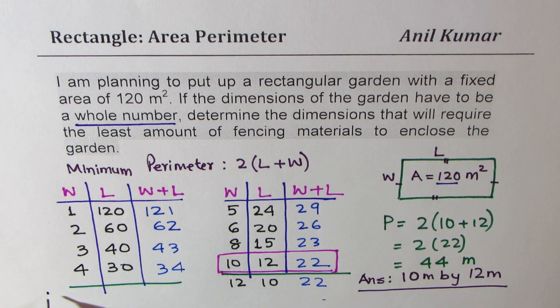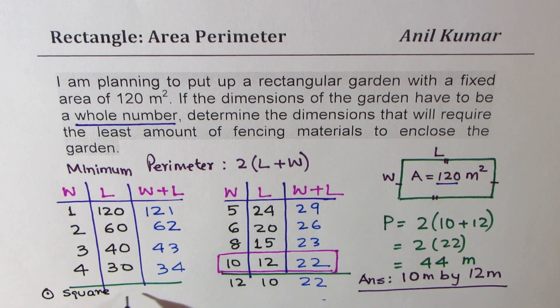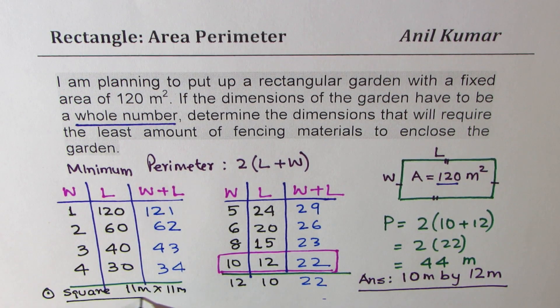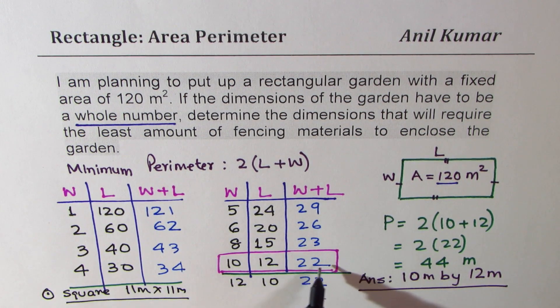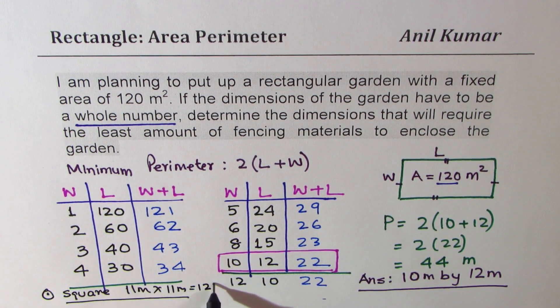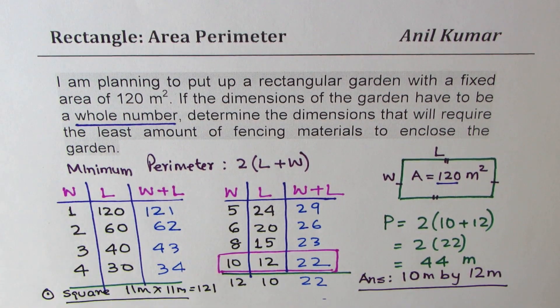Points to think about is 1 square 11 meter by 11 meter. We still have perimeter of 22, but the area is 121, slightly more. Do you note that?